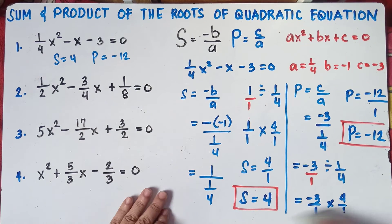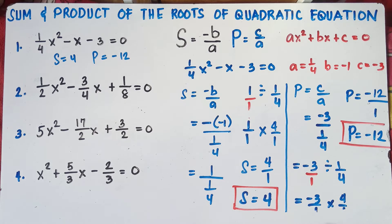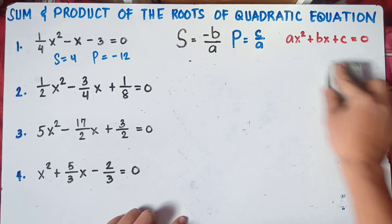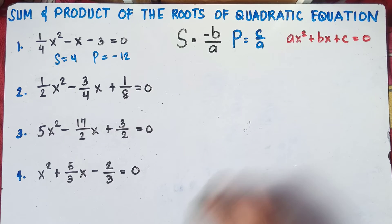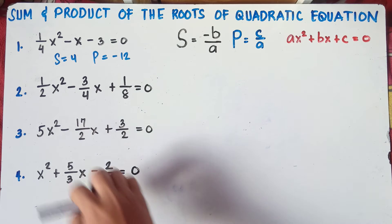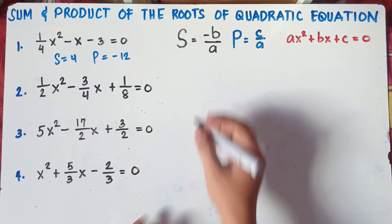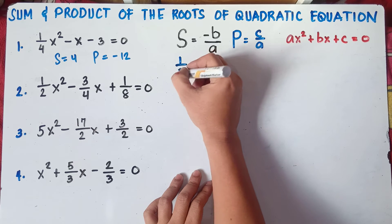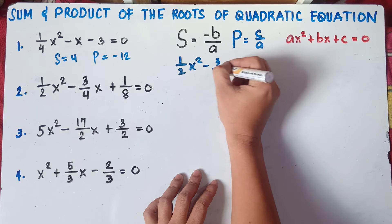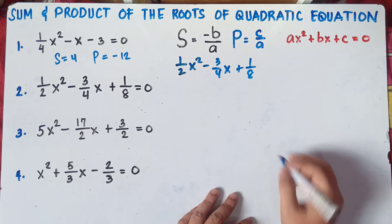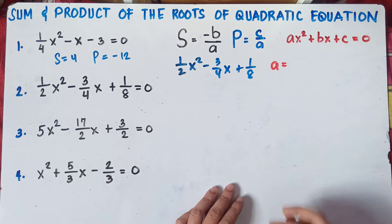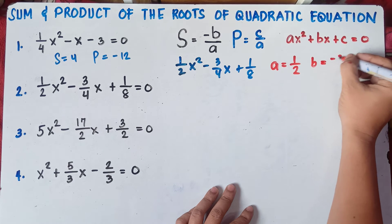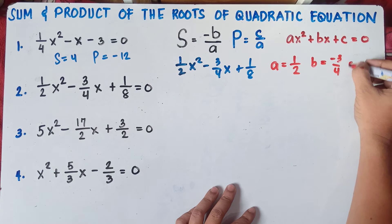Let's try number 2. This will be quite complicated because all values — a, b, and c — are fractions. The equation is (1/2)x² − (3/4)x + 1/8 = 0. Our a is 1/2, b is negative 3/4, and c is 1/8.